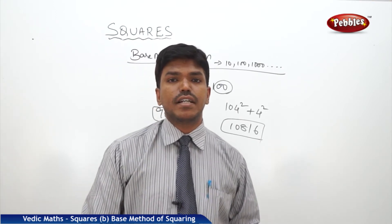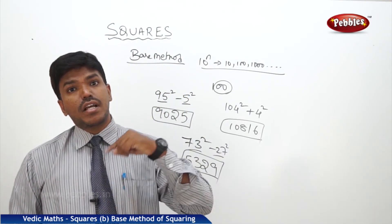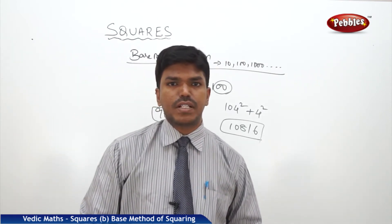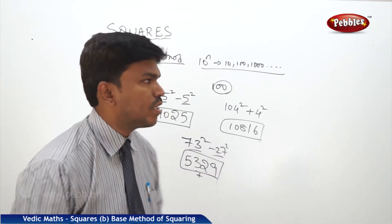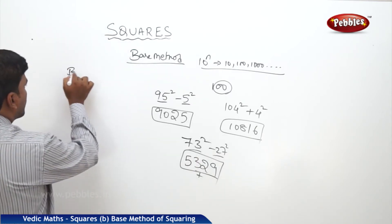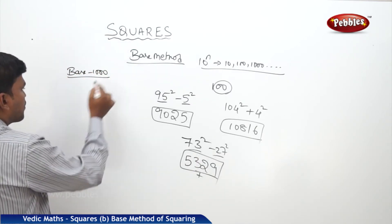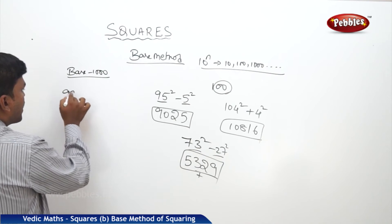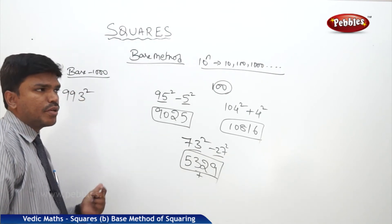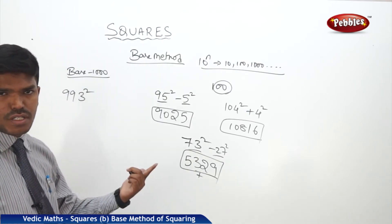Now we will extend the same thing to base 1000. Suppose I take base 1000. Let us take some numbers. I need 993 square. 993 is closer to 1000, so we take the base as 1000.